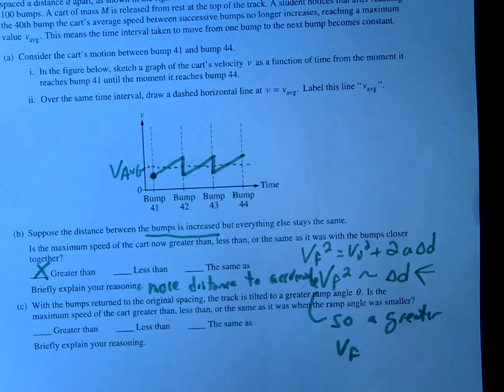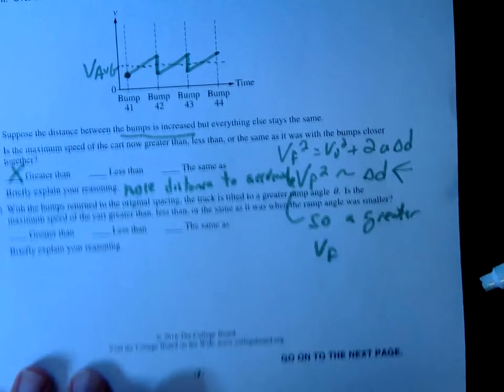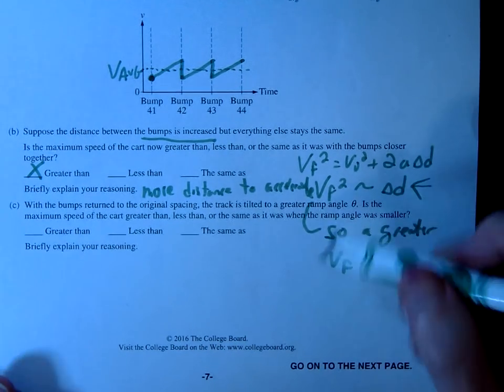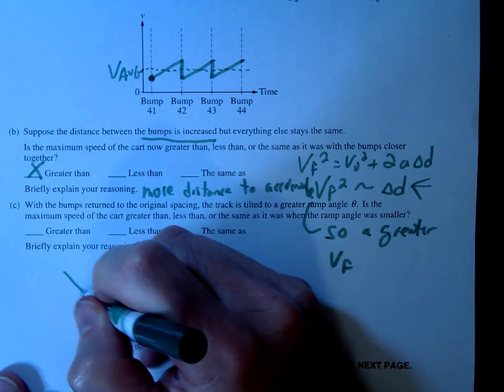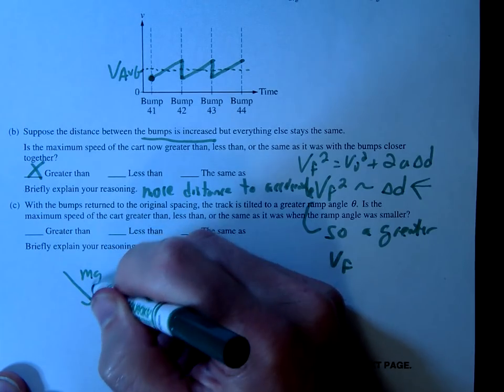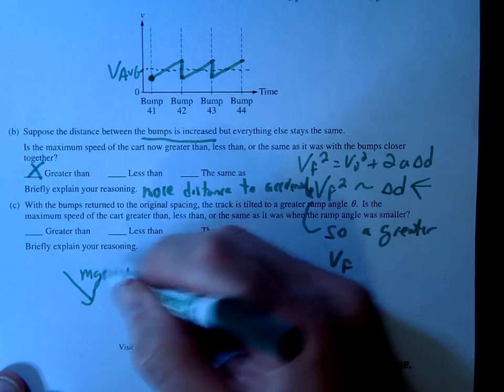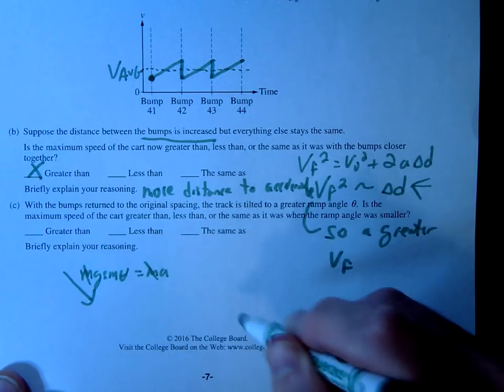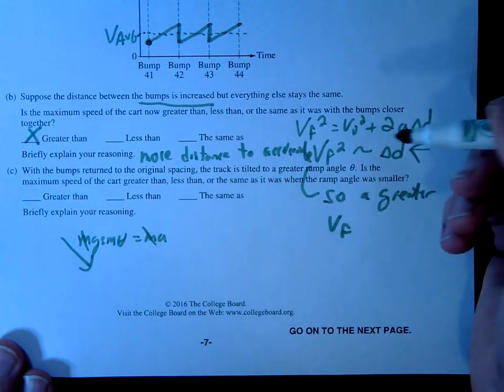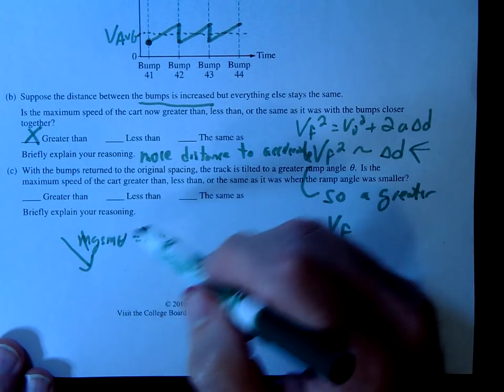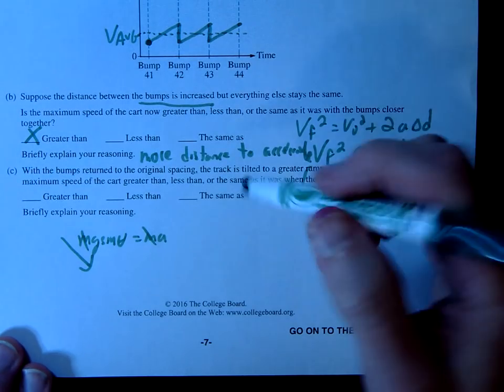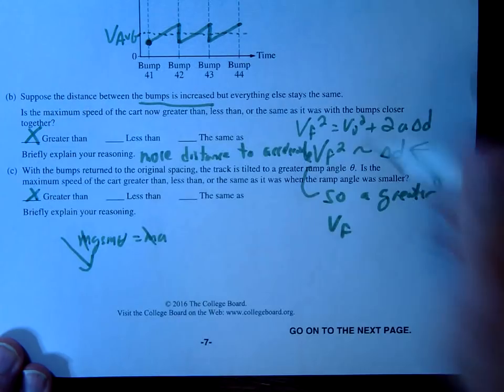Question C: what if we're tilted at a greater angle? Go back to FRQ number one to see this, but remember we're gonna have our mg sin θ here equals ma. So if we tilt this up at a greater angle, we're gonna have a greater acceleration. Acceleration is essentially going to be g sin θ here, and so it's going to accelerate at a more rapid rate.